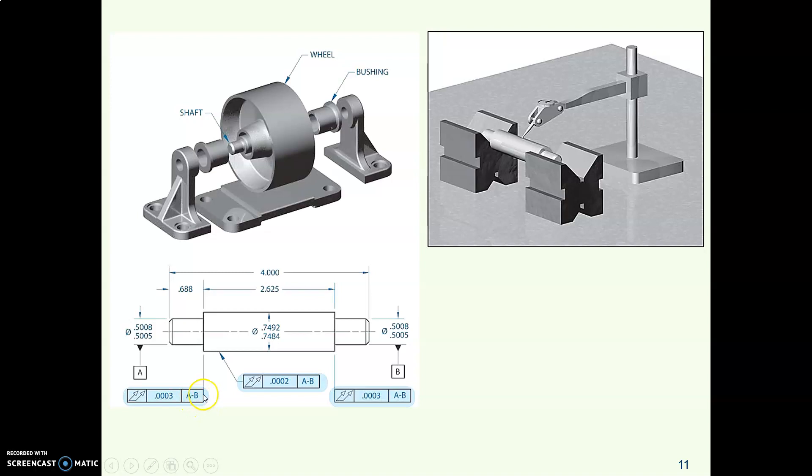So if that's how that shaft functions in its assembly, the drafter decided they were going to use a compound datum again. So they would make the small shaft on the left end and the small shaft on the right end together be the compound datum around which this part will rotate, as the inspector checks this flat surface on the left, this flat surface on the right, and the cylindrical surface along the length of the big diameter.